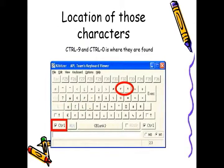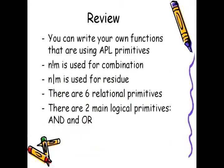These logical functions are located above 9 and 0. So control 9 is OR and control 0 is AND. So you can write your own functions that are using APL primitives. We can use bang or exclamation mark to find combinations. We can use modulo or control M to find residue between two numbers. We now know that there are six relational primitives and two main logical primitives called AND and OR.